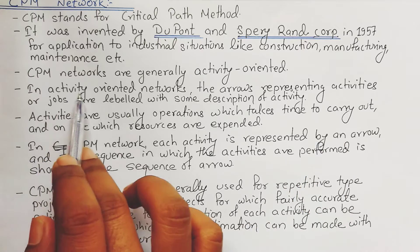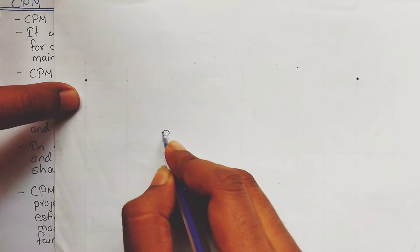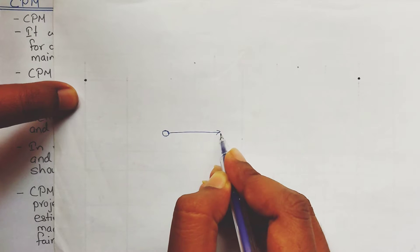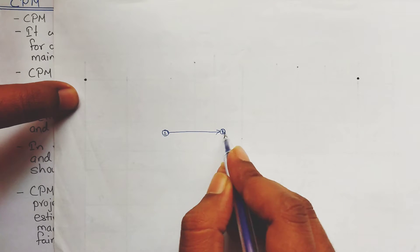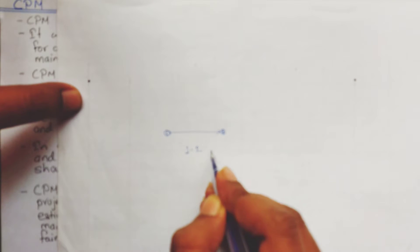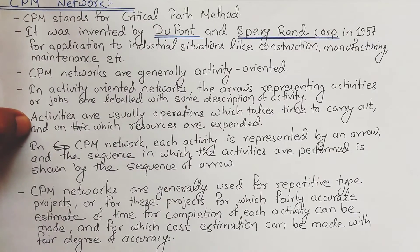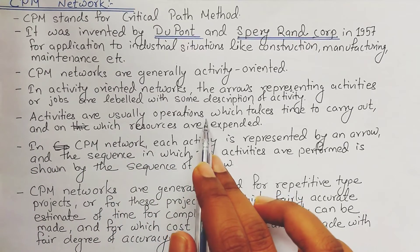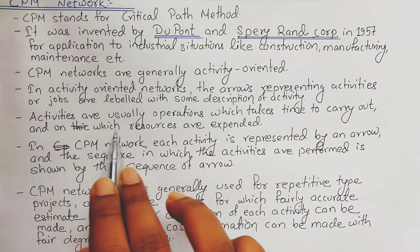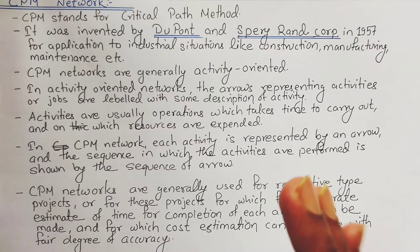In a CPM network, activities are represented by an arrow. Suppose this is our tail event, numbered 1, and this is our head event, numbered 2 — then our activity is 1 to 2, and we have some description about this activity. Activities are usually operations which take time to carry out and on which resources are expended. Activities are actions which require both time and resources to complete.